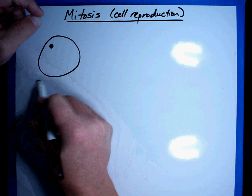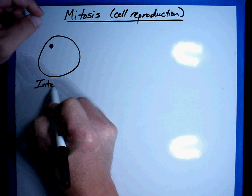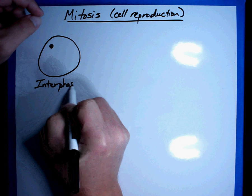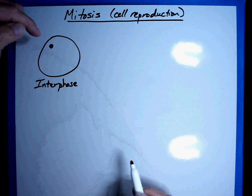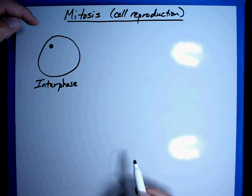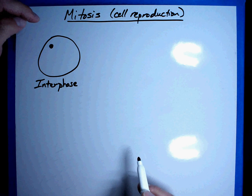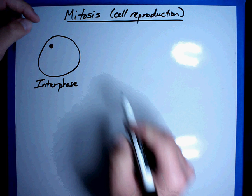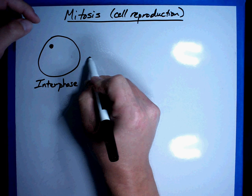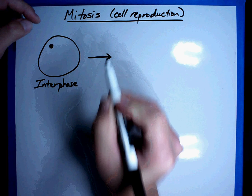Most of the cells in our body are in this phase right here called interphase. They're doing their job, they're operating the way they're supposed to, everything's working out great. Now let's say something has happened and we now have to make a new cell. Well, everything jumps into action and we start the process of mitosis.